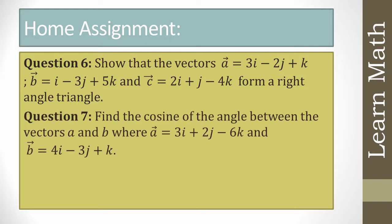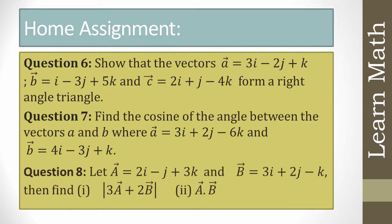Next practice question: find the cosine of the angle between vectors a = 3i + 2j - 6k and b = 4i - 3j + k. Also, let a = 2i - j + 3k and b = 3i + 2j - k, then find the magnitude of 3a + 2b, and also calculate a·b.